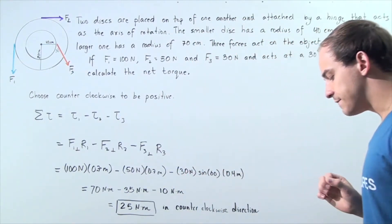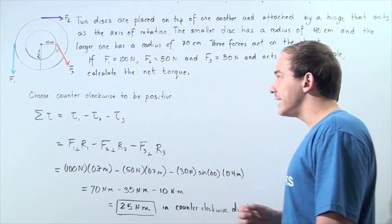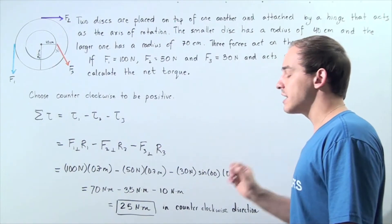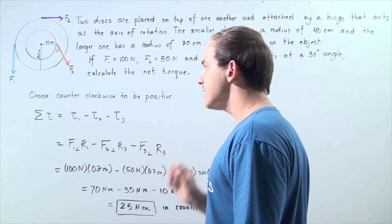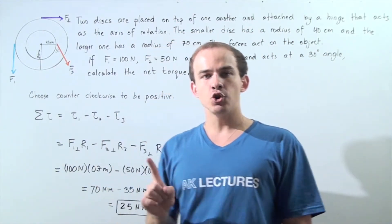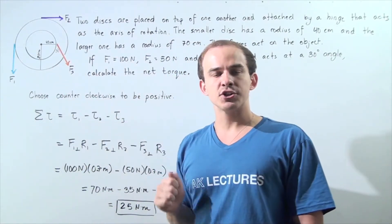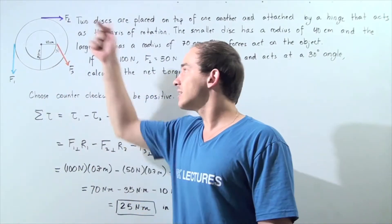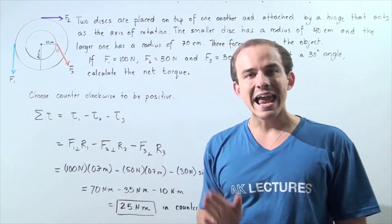Now, using this information, we'd like to calculate the net torque acting on our system of two disks. So we begin by choosing the counterclockwise direction to be positive and the clockwise direction to be negative.